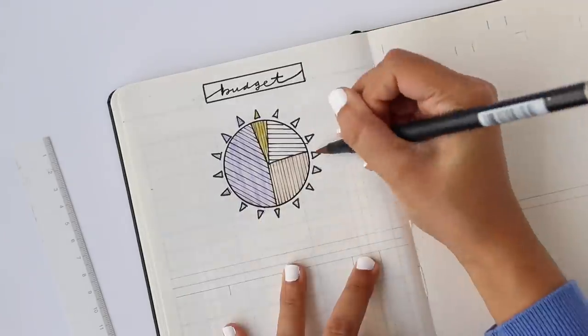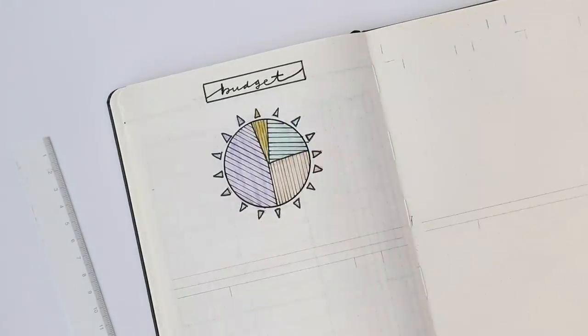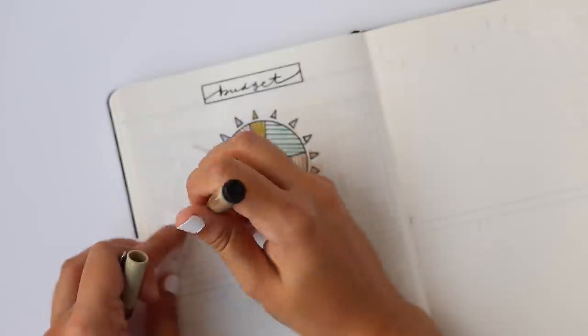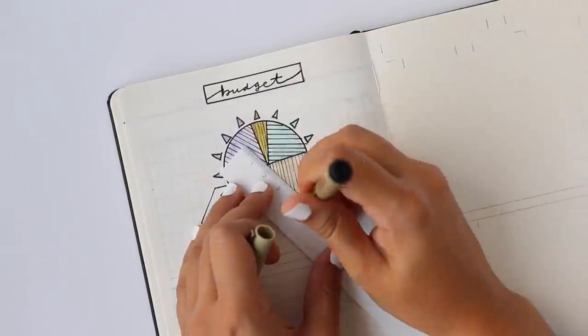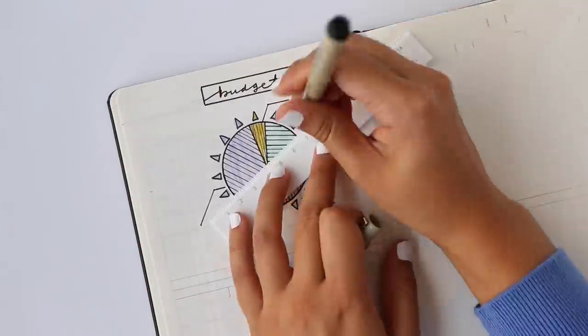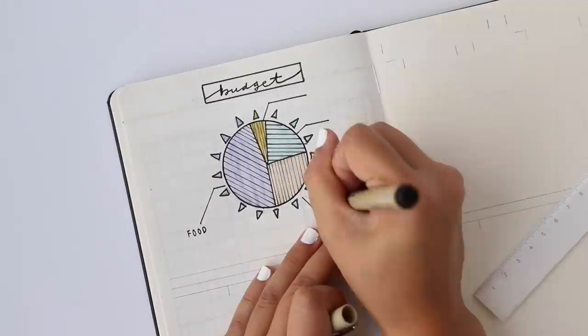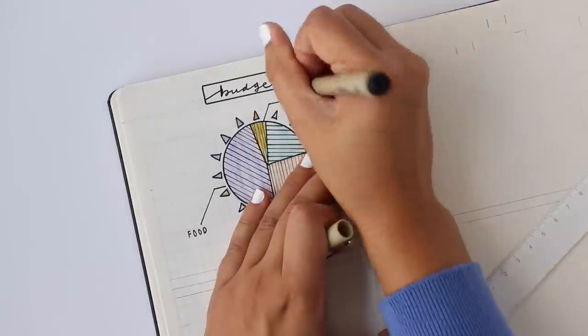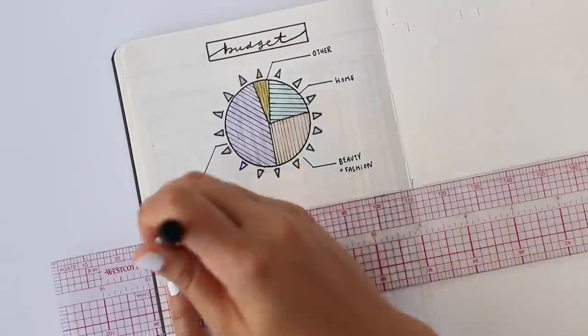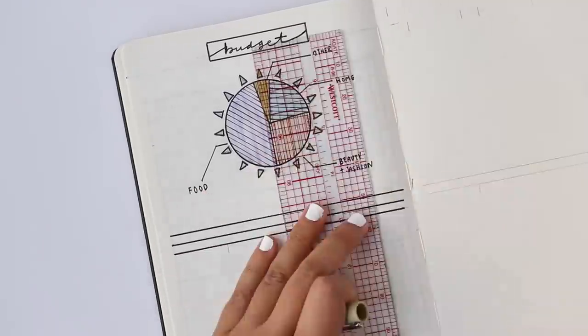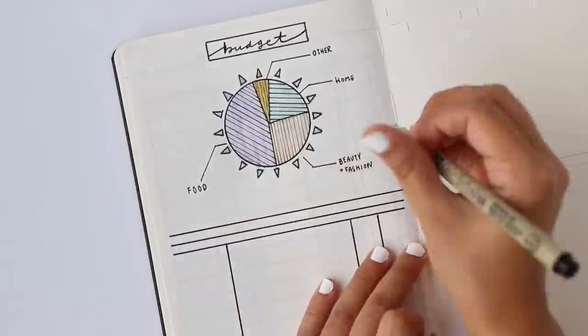I definitely plan on creating more intricate budget and spending trackers in the future, but for the typical student who may have moved out for the first time, is spending money on things like groceries and paper towels for the first time, this can be a really great spread for just getting you in the habit of paying attention to where your money is going and what things cost.